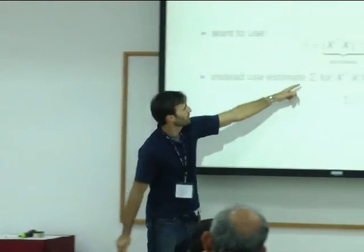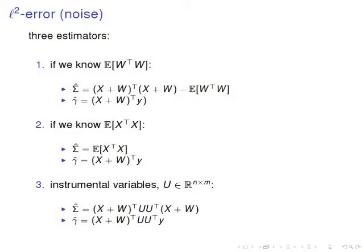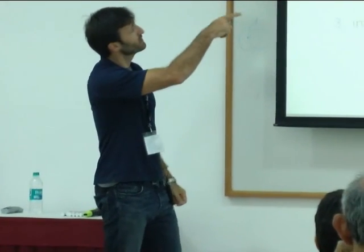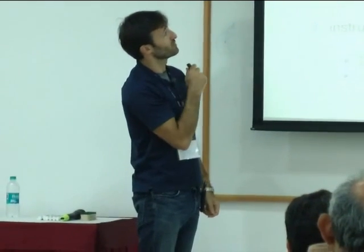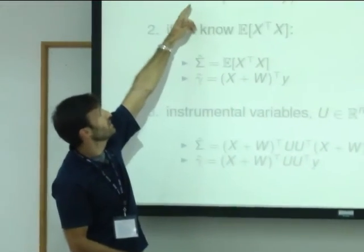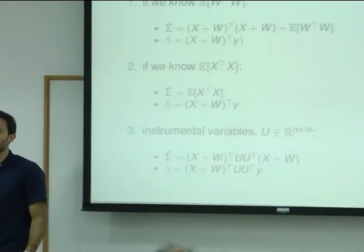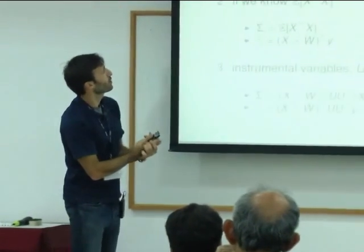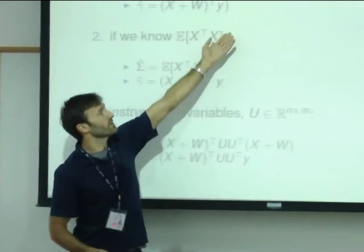So we're going to use some estimate sigma hat for X transpose X and some estimate gamma hat for X transpose Y. And there's cases of interest. So the first, depending on what you know. So the first is that suppose that you know the covariance of the noise, expected value of W transpose W. Then a natural thing to use for your estimate instead of X transpose X, you should use Z transpose Z and then just correct off by subtracting the expectation. So just incidentally this is very close to what Lowe and Wainwright do. They run lasso but modified by subtracting this off, and this is why you get non-convexity. Because this is something that's potentially, that is going to be full rank.